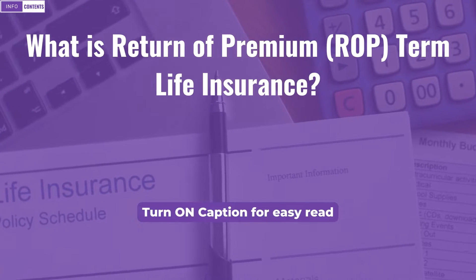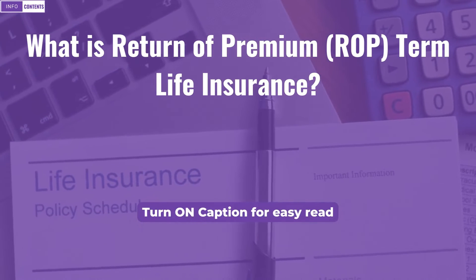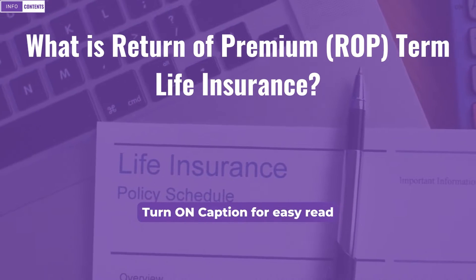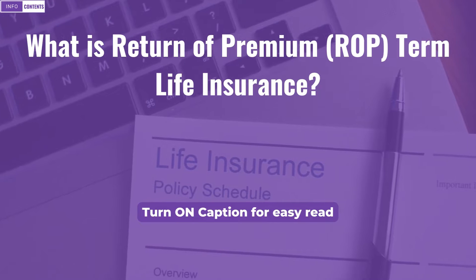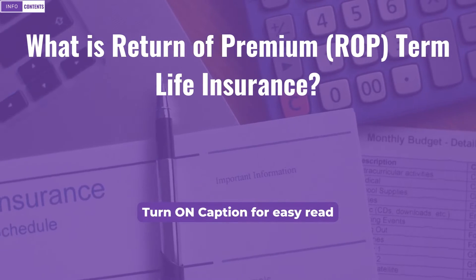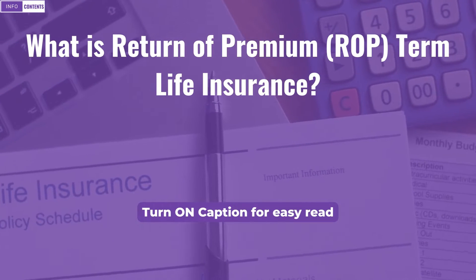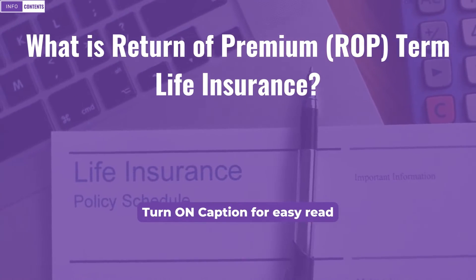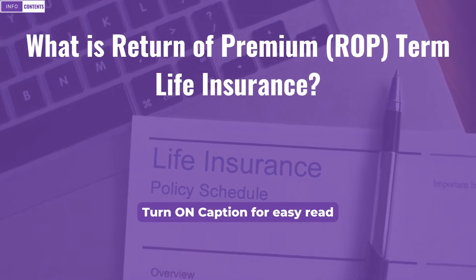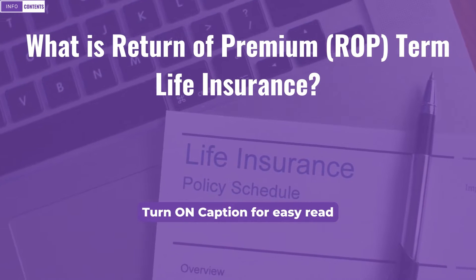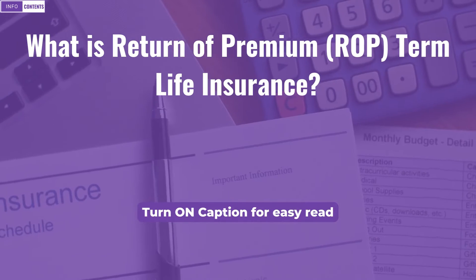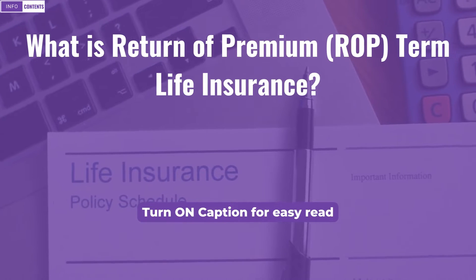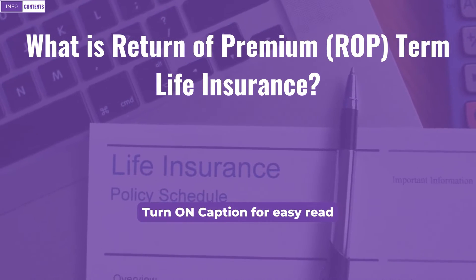What is return of premium ROP term life insurance? Return of premium term life insurance, also called ROP term life insurance, offers the ability for the policyholder to get the investment back after the policy expires, based on the number of premiums paid during the contract in years.